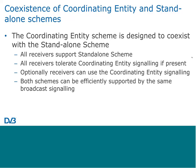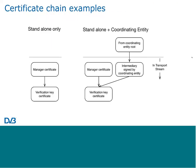To illustrate how both schemes coexist: on the left is a simple standalone certificate collection with a manager's certificate — observed as persistent in the broadcast — and a verification key certificate providing the public key. If you upgrade to also support the coordinating entity, a third intermediate certificate is added to the broadcast, which leads to the coordinating entity root distributed to the receiver by a private mechanism. Depending on whether the receiver supports the coordinating entity, it either operates in standalone mode or uses the coordinating entity certificate to follow the path to the pre-installed root.